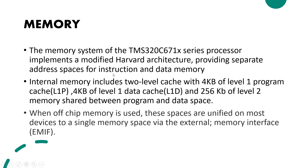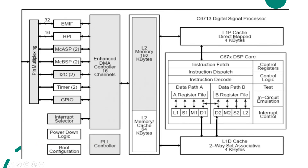The program and data memory together form the unified space. There is a 2-level cache memory: L1 program cache is 4KB and L1 data cache is 4KB. The L2 memory is 256KB total — split as 192KB plus 64KB. The L2 can be used as unified program and data space.